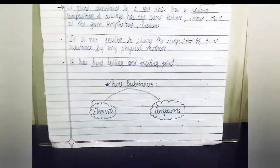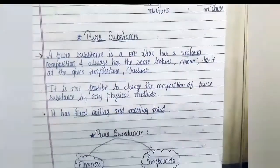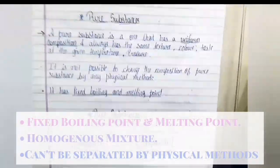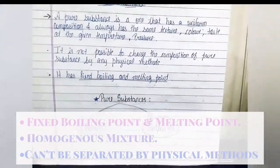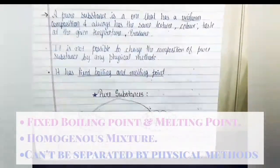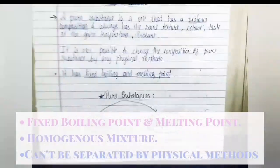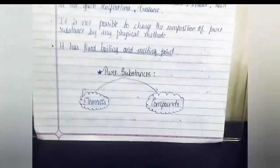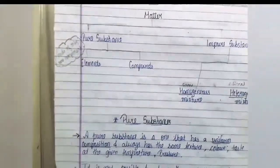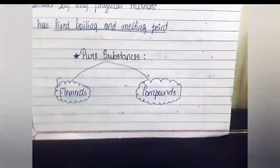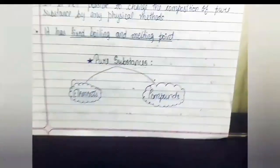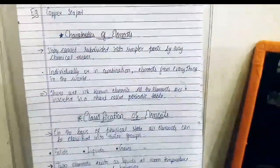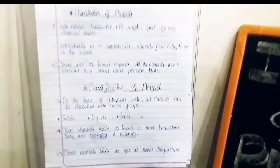Let us recap: pure substance is homogeneous in nature, it always has the same texture, color, and taste, its composition cannot be changed by any physical method, and it has a fixed boiling point and melting point. Pure substance is further divided into two parts: elements and compounds. Everything about elements — including characteristics and classification — will be covered in our next part.